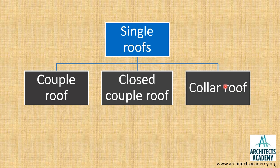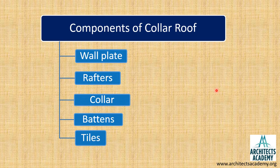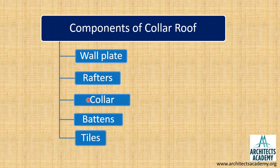In this particular presentation we are going to learn more about collar roof. The main components of the collar roof are wall plate, rafters, collar, battens, and ties. The different member here in the collar roof is the introduction of the collar.